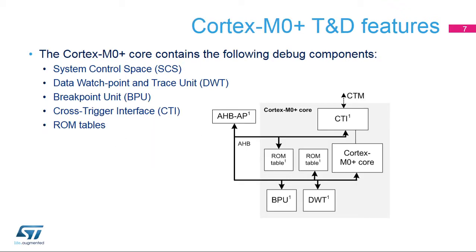All debug-related registers in the Cortex-M0 Plus core are accessed via the dedicated AHB access port AP-1. The ROM tables contain pointers to the base addresses of each debug component visible from the access port, and are used by some debug tools to automatically detect the topology of the core-side infrastructure in the target. The SCS, or system control space, contains the registers for controlling the processor core while in debug mode. The other units are described in the following slides.